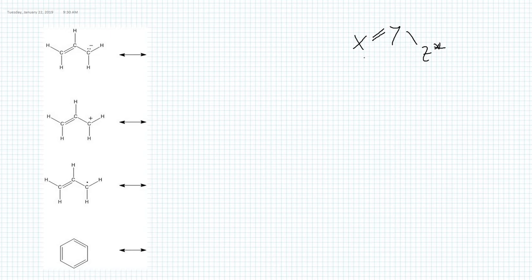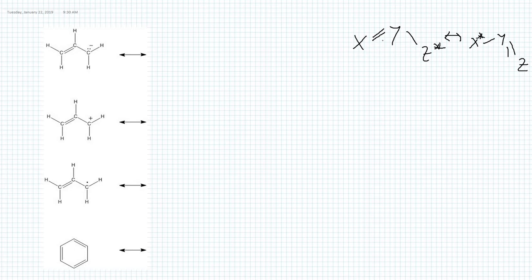For the X-Y-Z molecule where X-Y has a double bond (a pi bond), Y-Z has a single bond, and Z has either a lone pair, a positive charge, or a radical, the resonance form is: X-Y becomes a single bond, Y-Z becomes a double bond, and the asterisk moves to X. If there is a lone pair on Z it moves to X; if there is a positive charge on Z, X should have an empty 2p orbital in the resonance form.